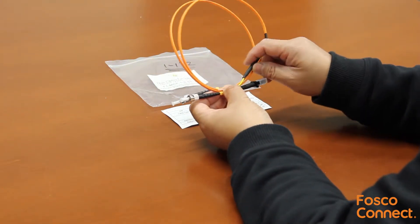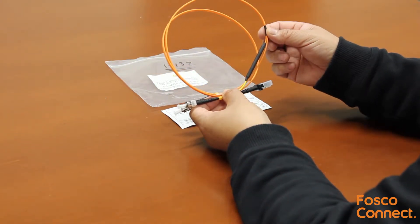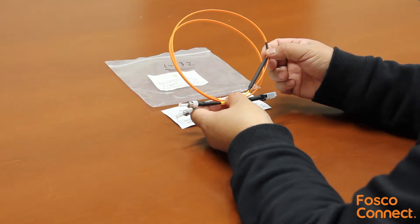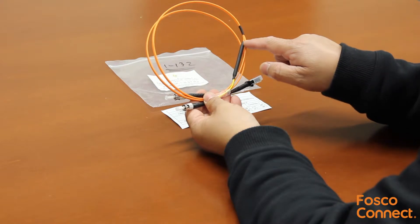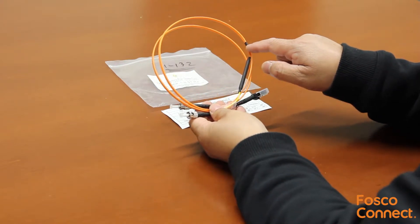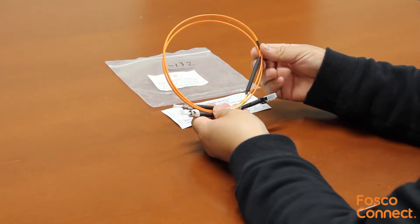One ST leg is single mode. It splices onto a 62.5 micro-OM1 multimode fiber by the mode conditioning splice. The single mode laser from the ST connector is offset and spread out within the multimode fiber core to optimize for multimode propagation performance.